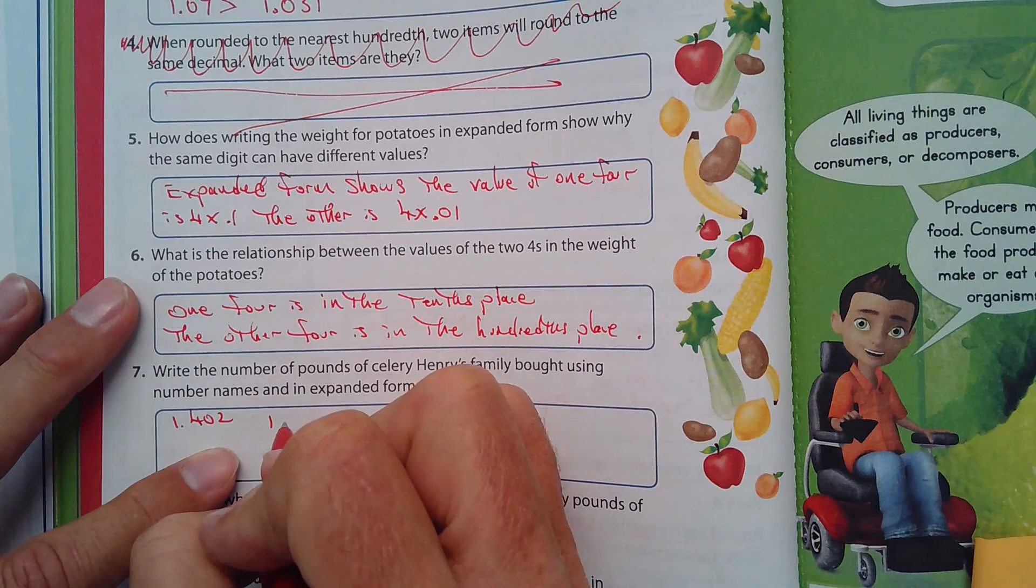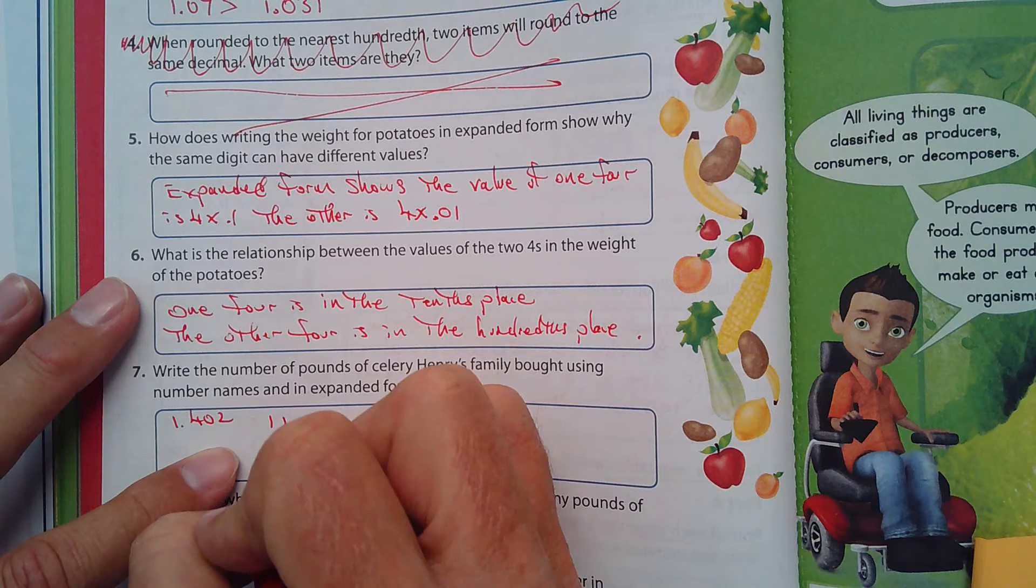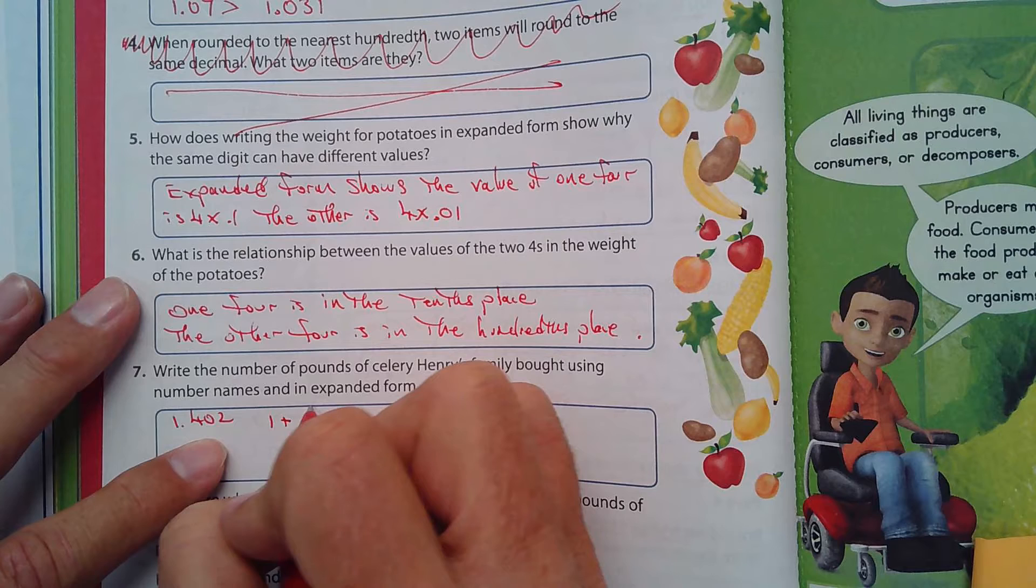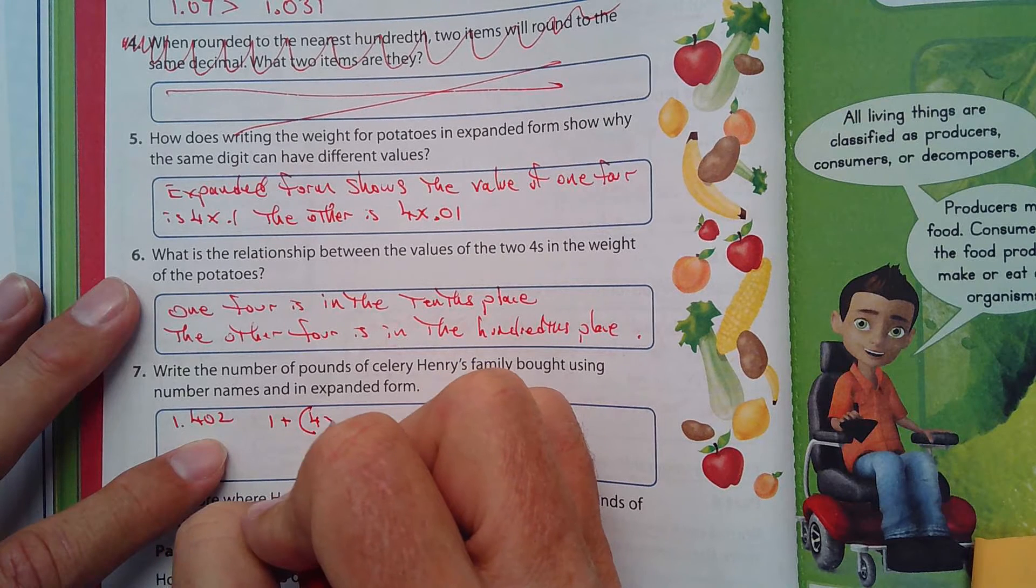So it'd be 1 plus 4 times, I'll put that in parentheses, 4 times, what, 1 tenth, right?